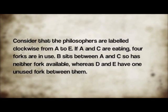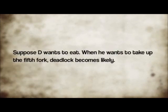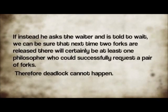Consider that the philosophers are labeled clockwise from A to E. If A and C are eating, four forks are in use. B sits between A and C, so has neither fork available, whereas D and E have one unused fork between them. Suppose D wants to eat — when he wants to take up the fifth fork, deadlock becomes likely. If instead he asks the waiter and is told to wait, we can be sure that the next time two forks are released, there will certainly be at least one philosopher who could successfully request a pair of forks.